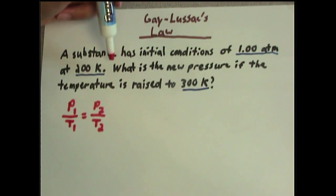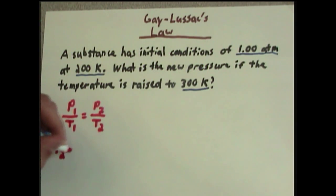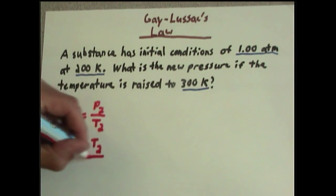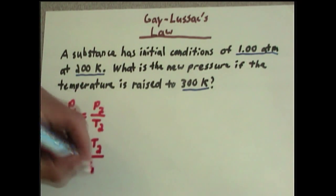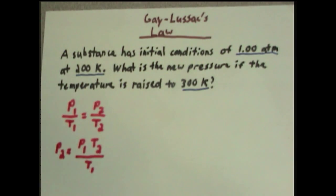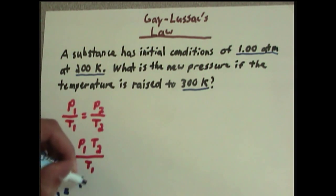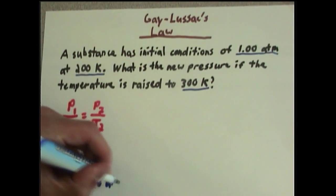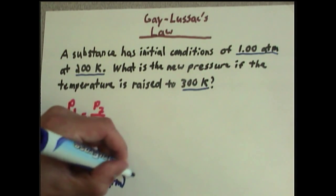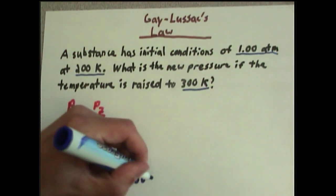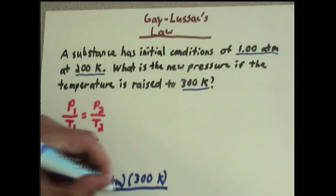Now, this problem is obviously interested in P2, the new pressure. So rearranging this equation algebraically, we get P2 equals P1 times T2 divided by T1. And we have all of our numbers, so this problem just becomes a plug-and-chug.